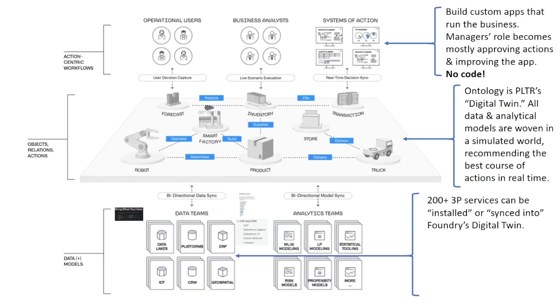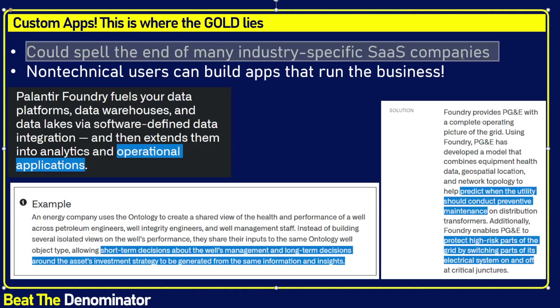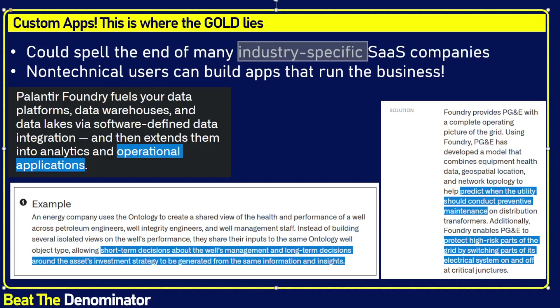Custom apps — right here — is where the gold lies. This is where I believe most of the value of this company will be built. If non-technical users can create industry-specific systems — and if you look at Palantir's videos it seems fairly easy to do — then it's the end of industry-specific SaaS. You don't need Toast anymore to run your restaurant because you can just build a custom-built system for your industry with Palantir and customize it. Every company can have its own operating software created through data apps.